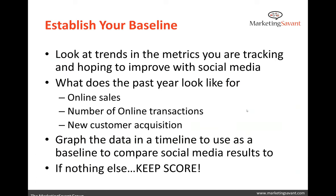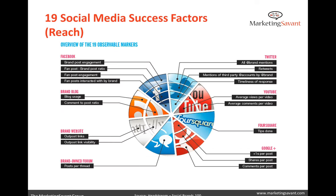Let's talk about the second step and move forward: establishing baseline metrics. This is where we look at things we've done in the past and how social media has influenced them. If we're doing nothing else in social media, we're keeping score. This is an interesting graph from a recent report by Headstream — a blog post about the top 100 social brands and what they measure: engagement, post-to-fan post ratio, interactions, comment-to-posts. As we get to the dashboard in a few minutes, we'll see some of these come back.